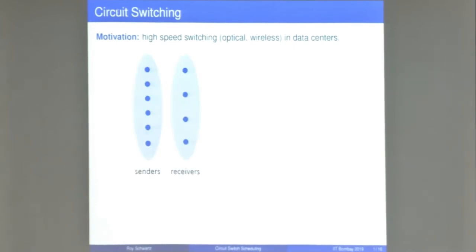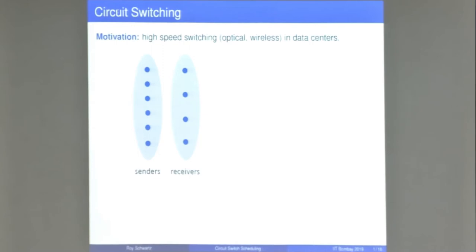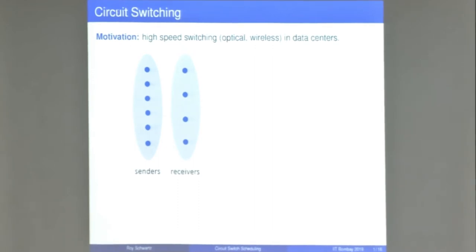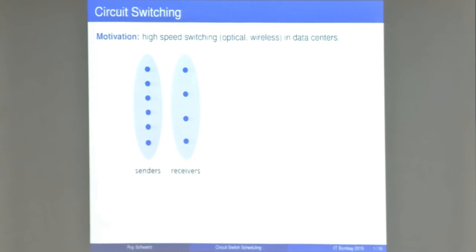On a high level, what we have here is a collection of senders and a collection of receivers. At any given time we want to decide which sender sends information to each receiver. Each receiver can receive information from at most a single sender, and each sender can send information to at most a single receiver.